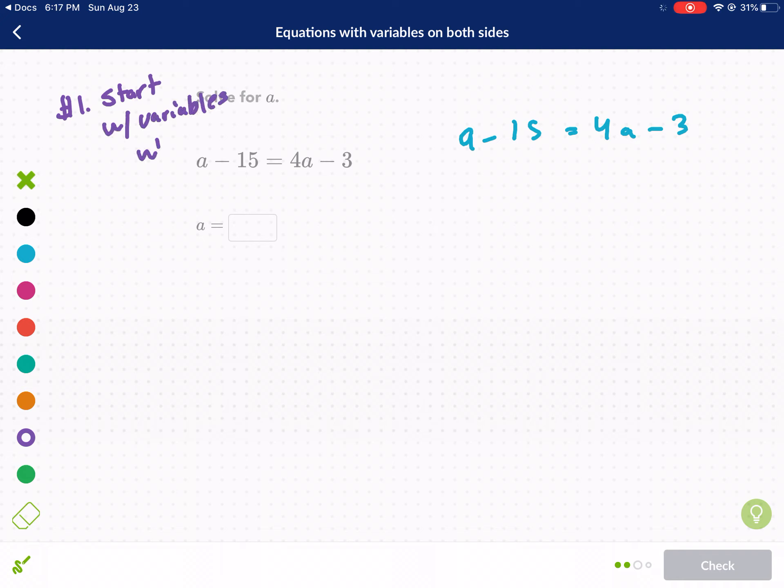I always start with your variables when you have variables on both sides. So I am going to subtract a from both sides first. We have a positive a, opposite operation, subtract a. That cancels. We have negative 15. The sign stays equals 4a minus a is 3a minus 3.